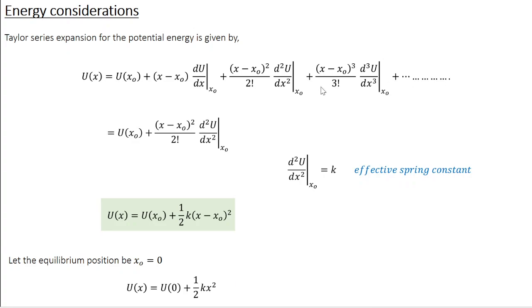Now, if the oscillations are small, then the value of (x − x₀) is going to be very, very small, which means you can neglect all the higher order terms. All terms starting with the third order can be eliminated. If you look at the remaining first three terms, we examine them one by one.